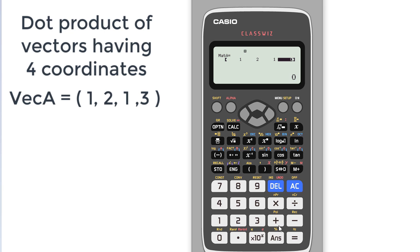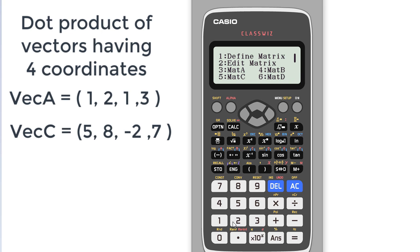Now press AC. If you want, you can define another matrix. Let's say we define another matrix, matrix C, which is actually a vector C. One row and four columns. And I will put the values: 5, 8, -2, and 7.